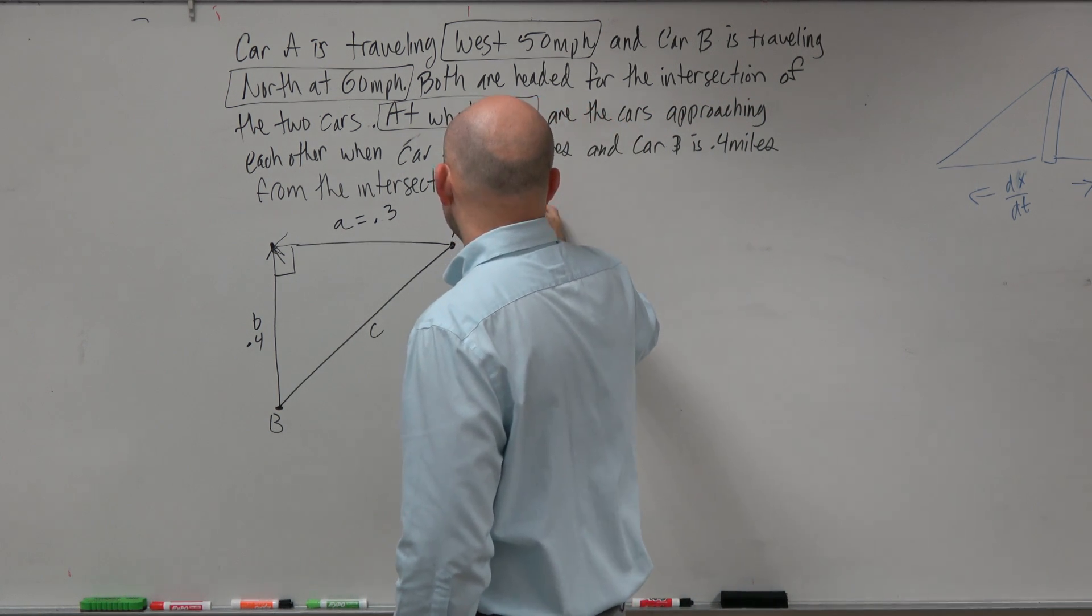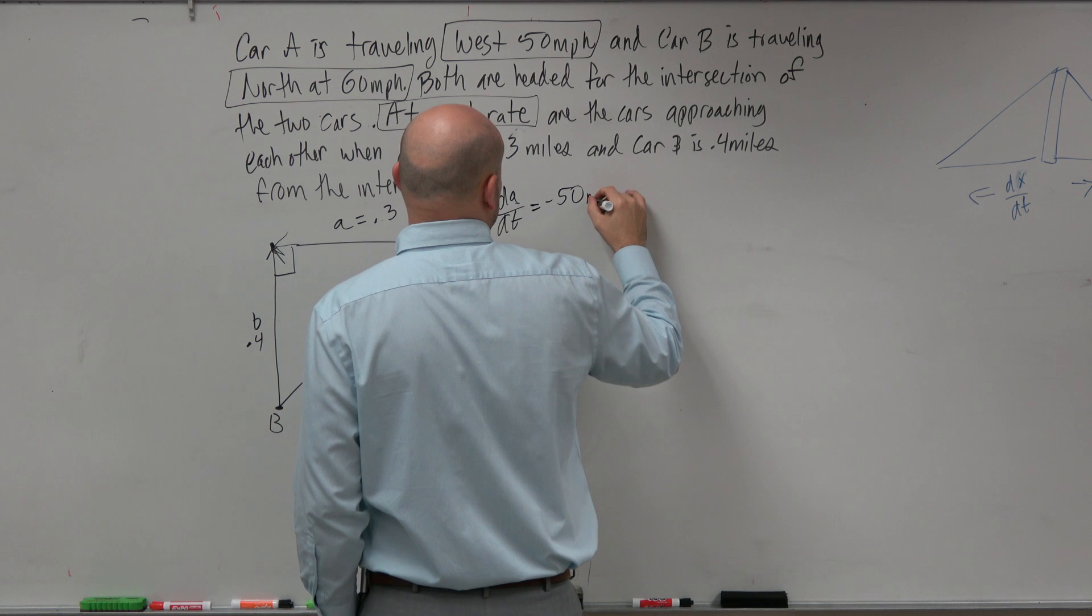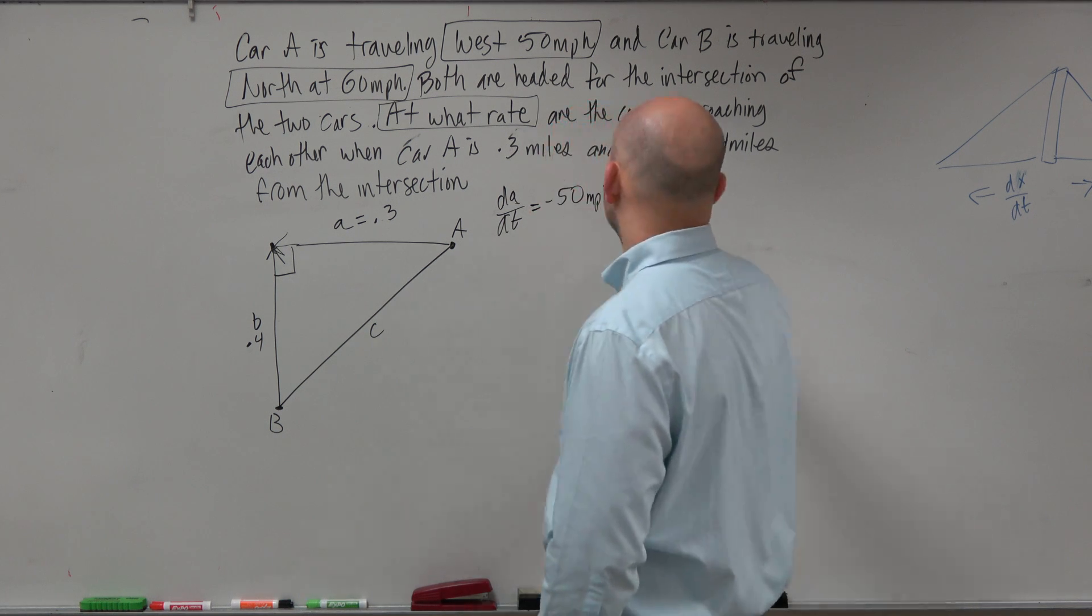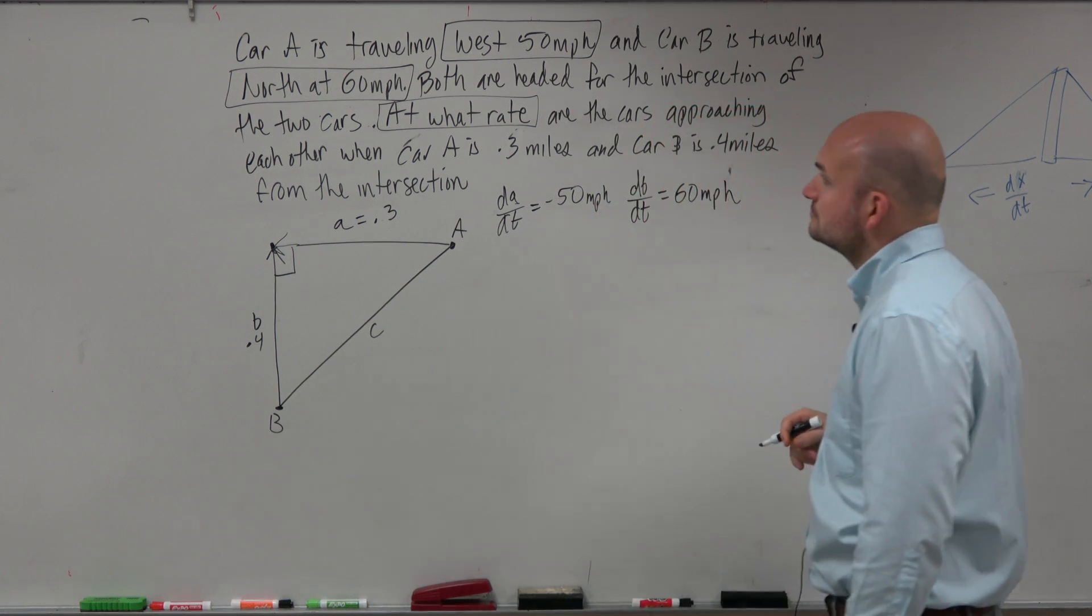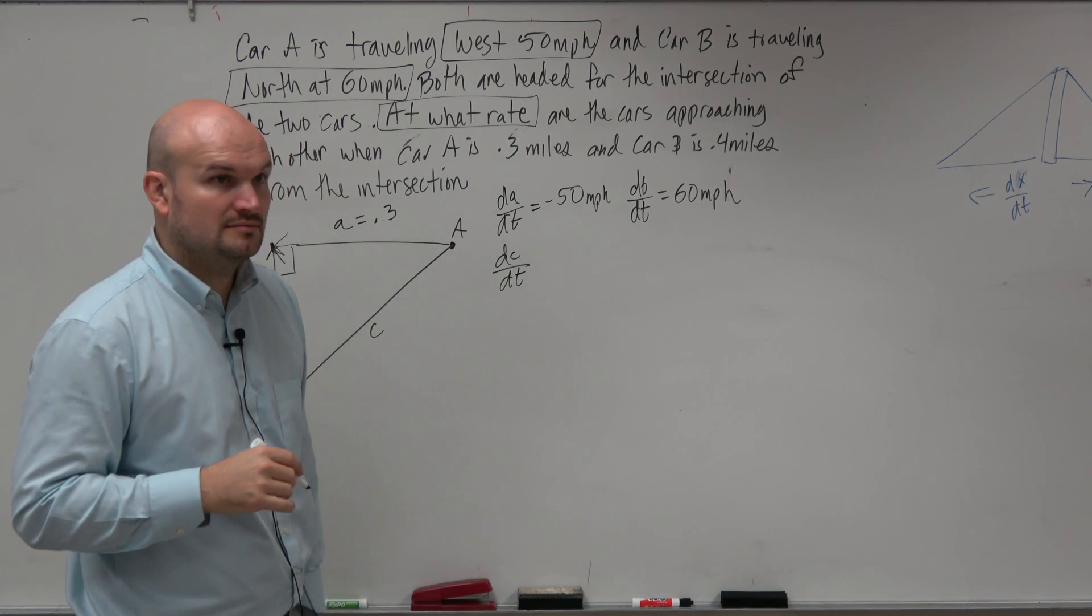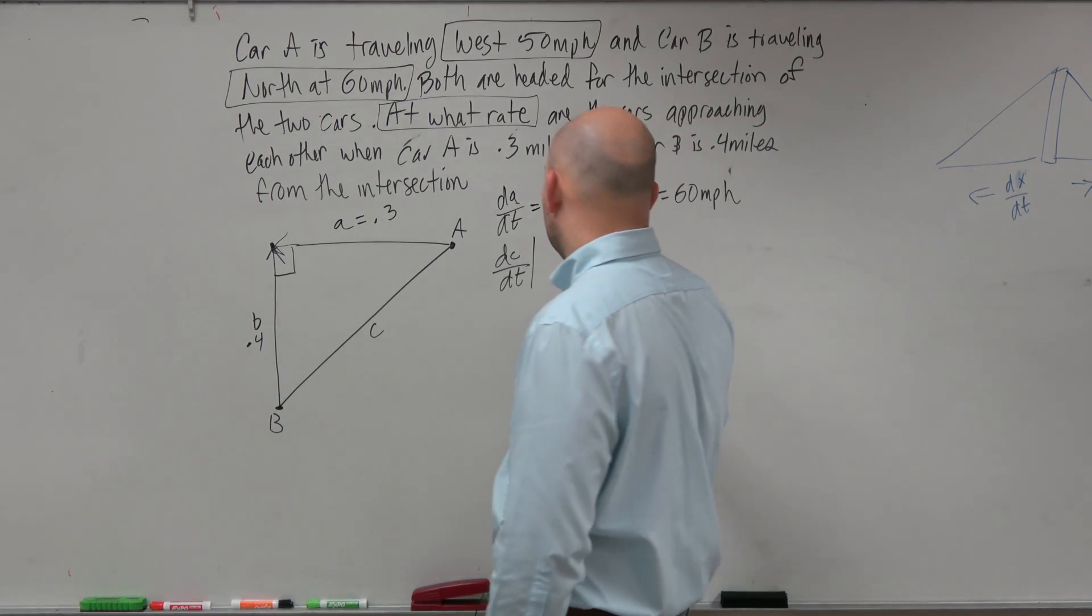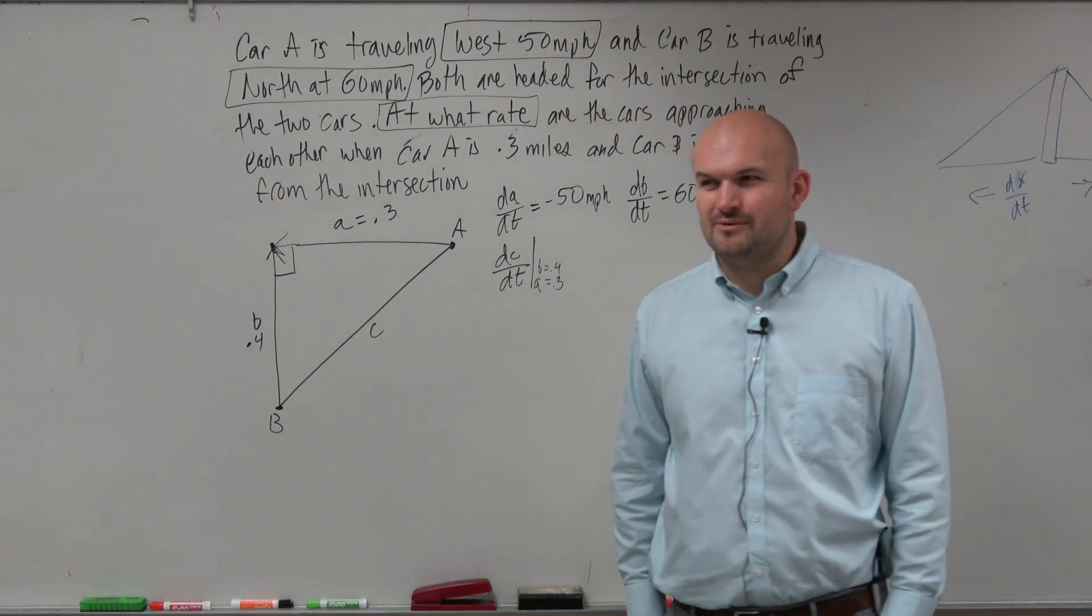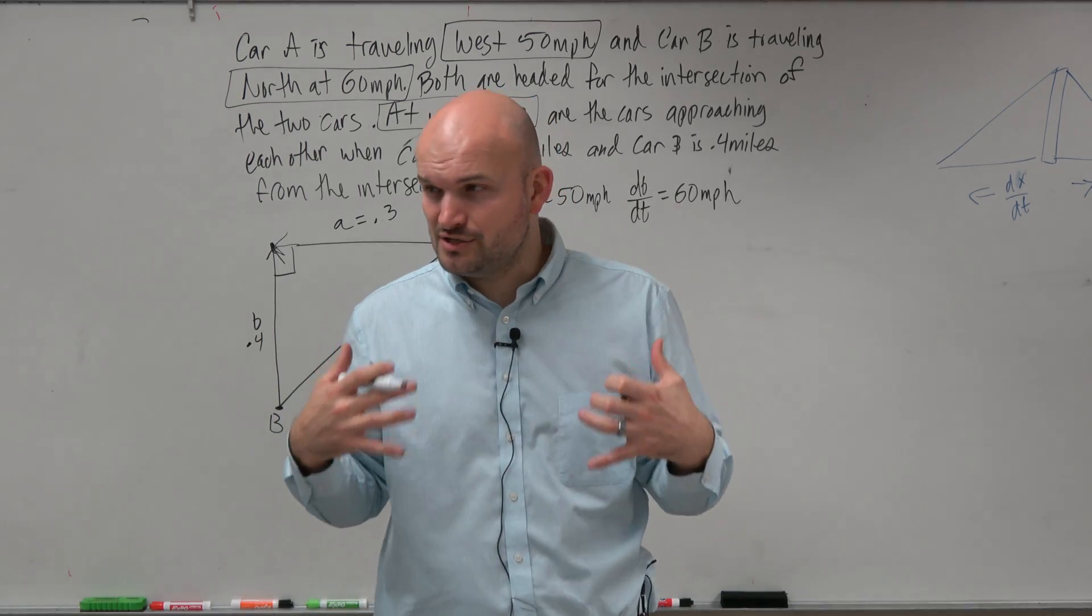We know that dA/dt, that's the rate of A is moving, is going to be 50 miles per hour, but that's going to be in the negative direction. We know dB/dt is going to be going north, so that's going to be a positive 60 miles per hour. And therefore we're looking for dC/dt. We're looking at the rate of how fast are they approaching each other when A is equal to 0.3 and B is equal to 0.4.